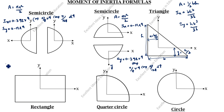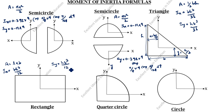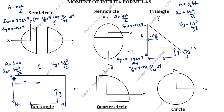Next, we will see rectangle. Area of rectangle is equal to l into b. What is the moment of inertia of rectangle formula? Ix is equal to bh cube by 12. Iy is equal to h b cube by 12. This is b. This is h. How we will calculate x and y? We will take this as b, and this one we will take as h. Y is equal to h divided by 2 — that is why h divided by 2. x is equal to b divided by 2.